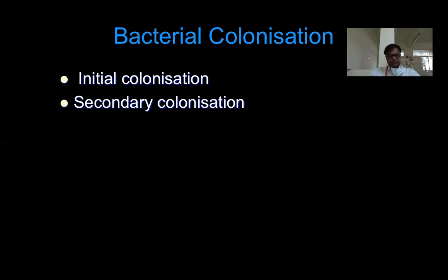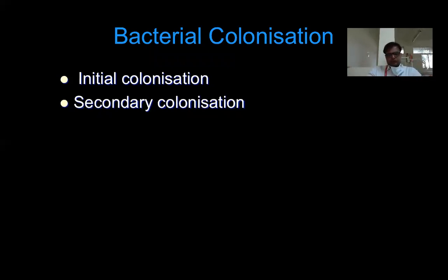The next step in the formation of plaque is bacterial colonization. The colonization of bacteria onto the tooth surface is a two-step procedure. The first step involves what we call initial colonizers — the first set of bacteria that attach onto the tooth surface. These bacteria thrive, multiply, and then change the local environment, which facilitates addition of newer bacteria into the same area. That is what we call secondary colonization.